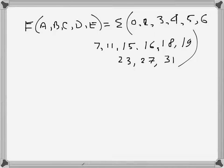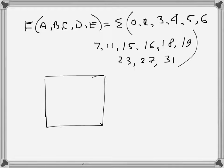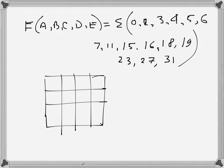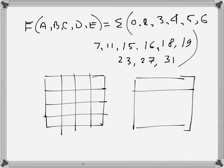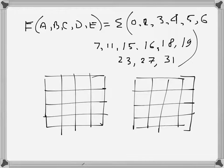Here is another five variable sum of products expression that I need to minimize using a K-map. For five variables, I will draw two K-maps. Starting from scratch, I will draw the K-maps first.